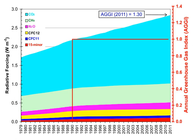Some gases have indirect radiative effects whether or not they are greenhouse gases themselves. This happens in two main ways. One way is when they break down in the atmosphere they produce another greenhouse gas. For example, methane and carbon monoxide are oxidized to give carbon dioxide, and methane oxidation also produces water vapor.